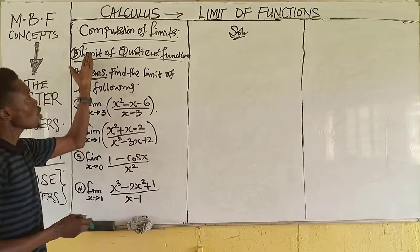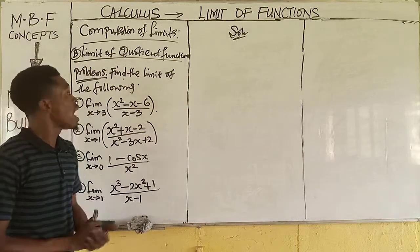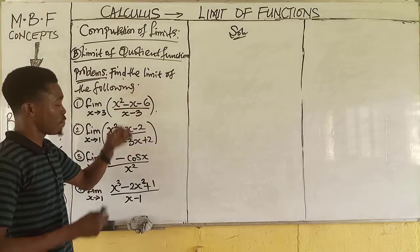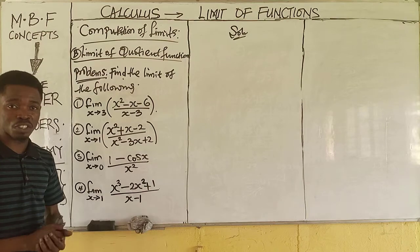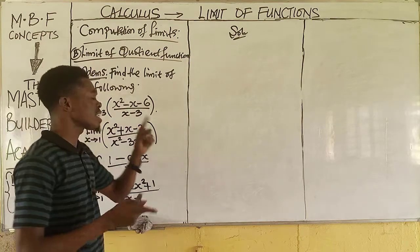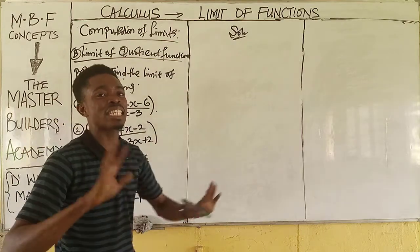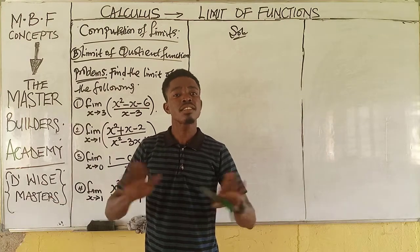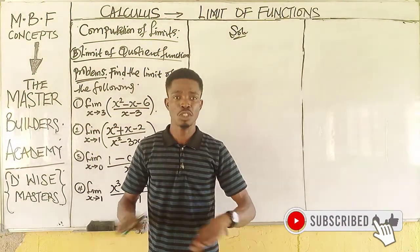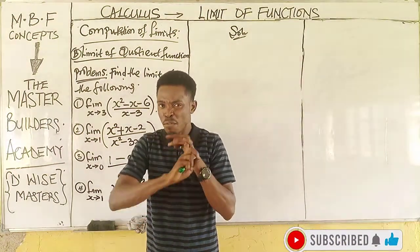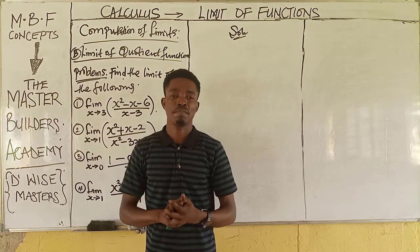Now let's get to work on the board. We have computation of limits — this is a continuation class. We are still looking at limits of quotient functions. The first thing you should always do is pay attention to the function at the denominator. When you understand this principle, you will never make mistakes in any limit question. Watch out for the function at the denominator and see what happens when you substitute the given value of x.